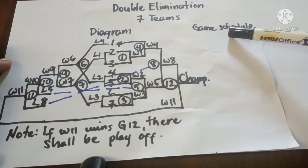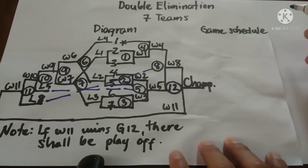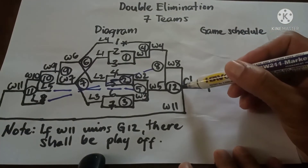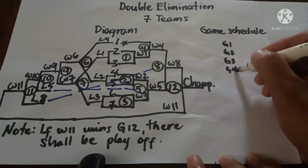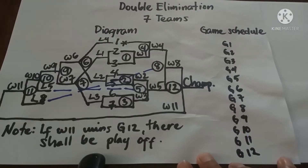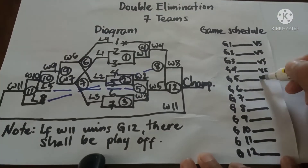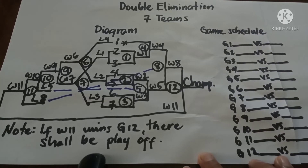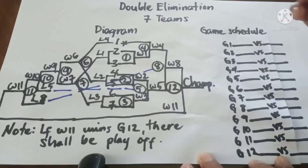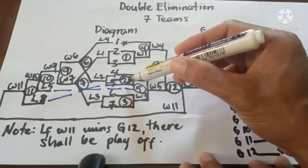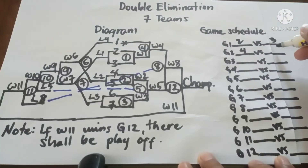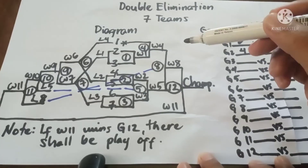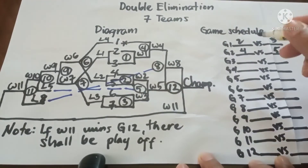Now let's interpret the diagram for the game schedule. Since we have 12 games: Game 1 is 2 vs 3. Game 2 is 4 vs 5. Game 3 is 6 vs 7.